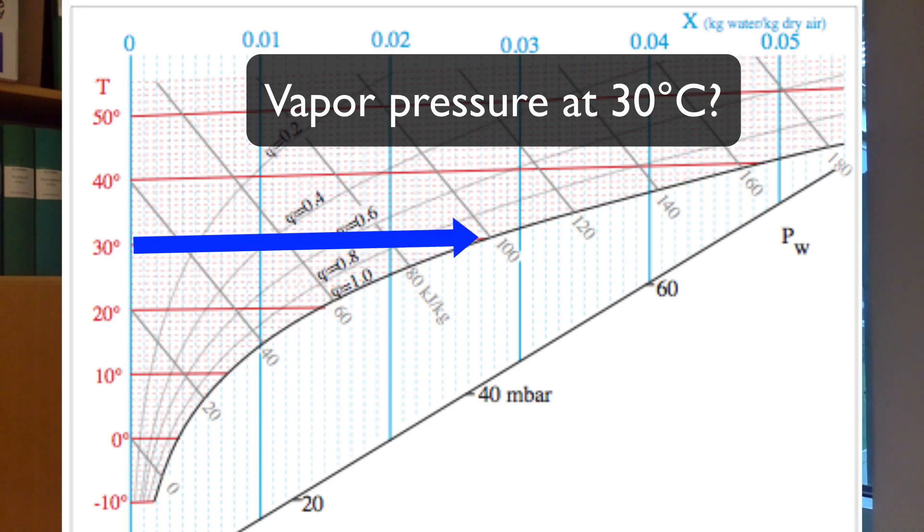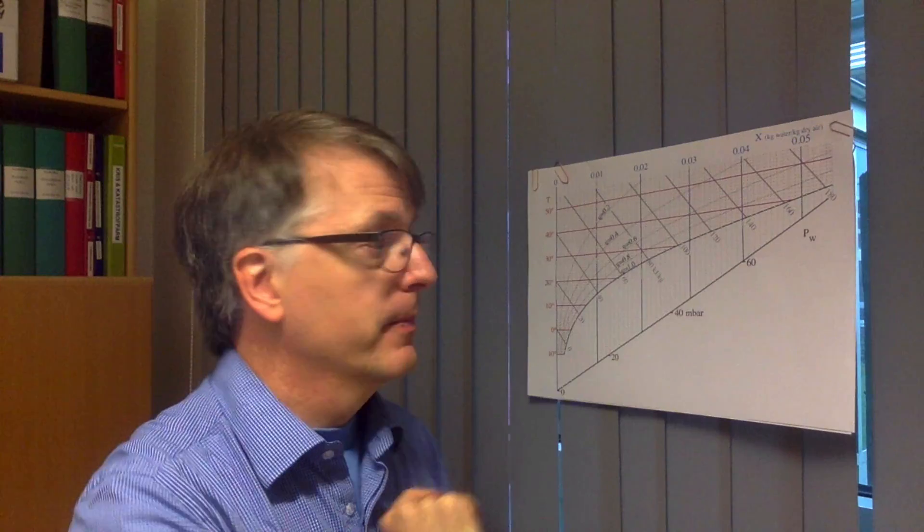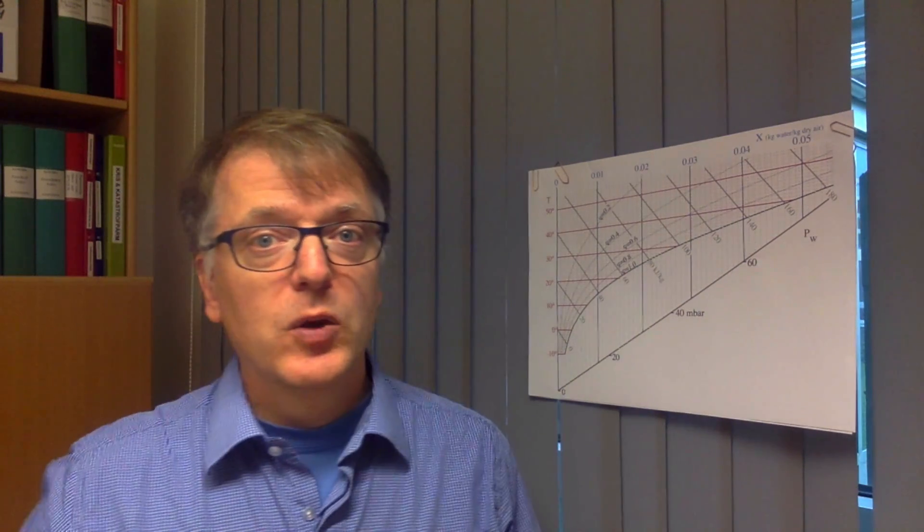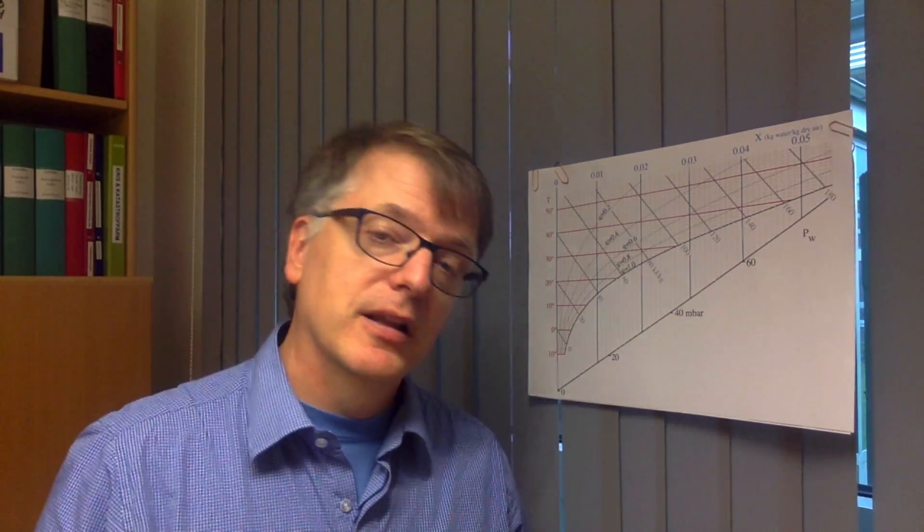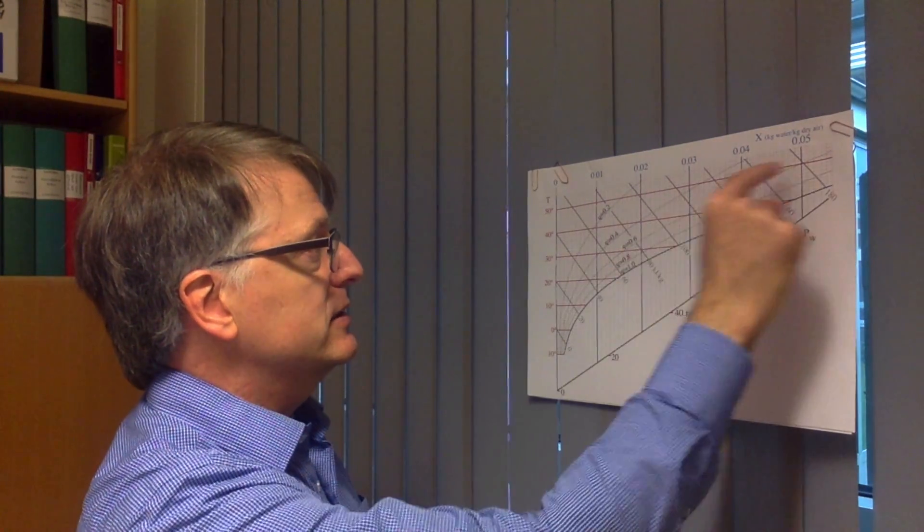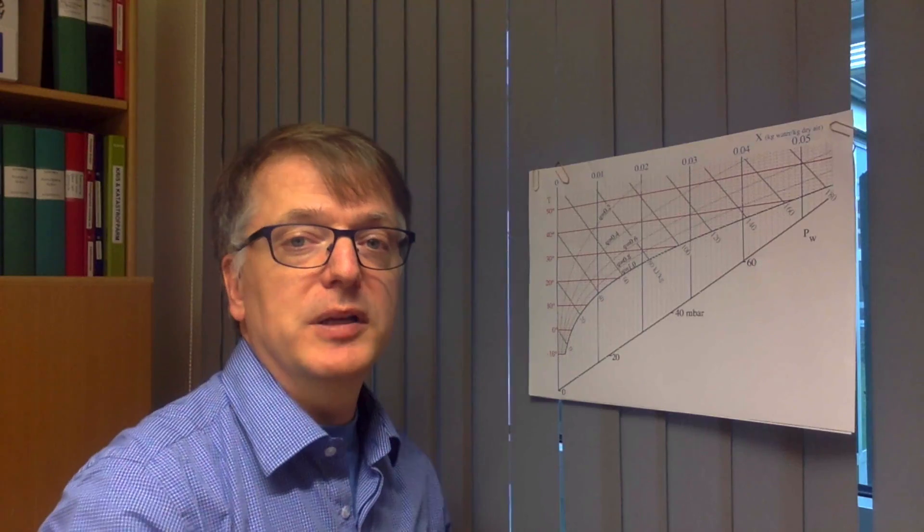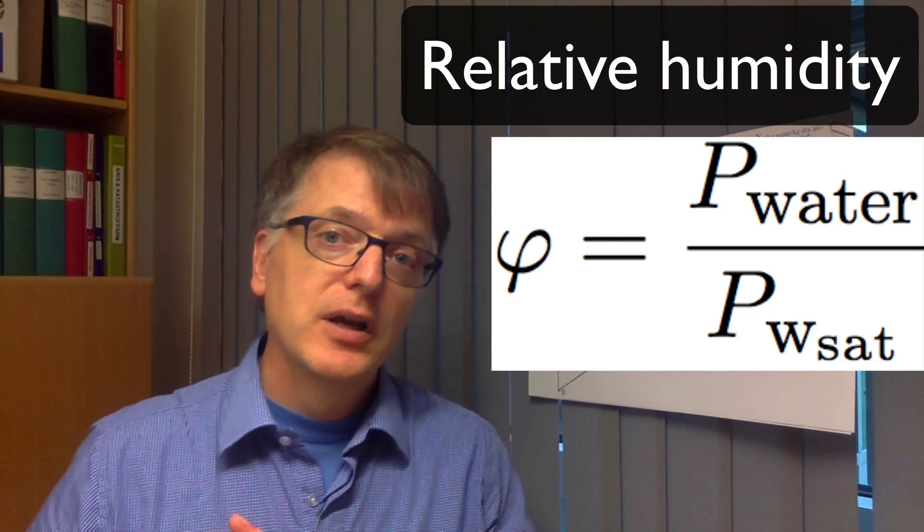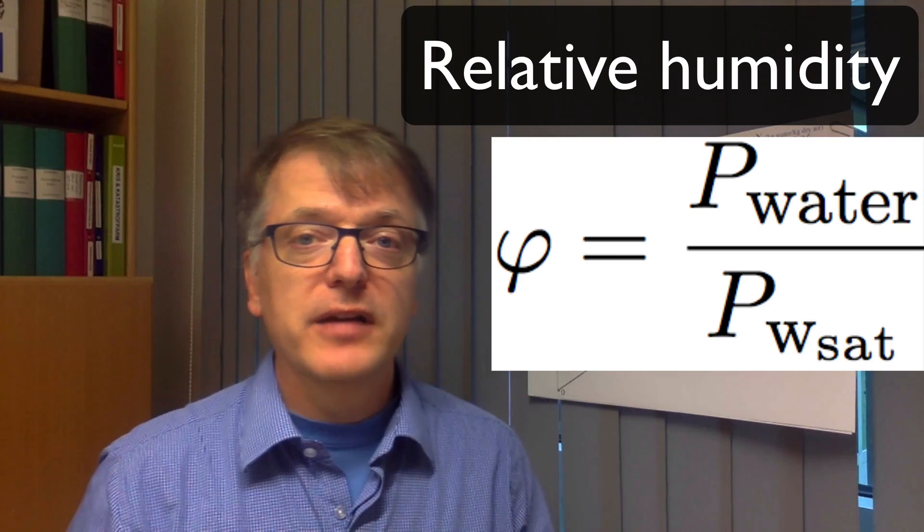And you can't really go beyond that because then water starts to condensate out from the system and then leaves the gas. And you can draw different lines here for different relative humidities. So, how much water we have in relation to the vapor pressure at that temperature.